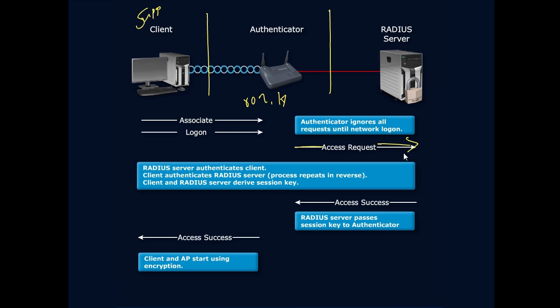The RADIUS server then authenticates the client and sends an okay back to the authenticator. But that's not all — the RADIUS server also authenticates itself to the client, so we have two-way authentication. This makes sure that there is no rogue device in the network, and the client ensures that it is connecting to the correct environment.